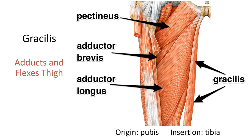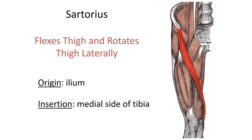The sartorius is the longest muscle in your body — a thin strap-like muscle. It flexes the thigh and rotates it laterally: if you sit down in a chair and cross your legs, you're using this muscle. It originates off the ilium and runs to the tibia. The word sartorius in Latin means tailor — and if you go to a tailor to get pants fitted, they run a measuring tape up your inseam along the sartorius muscle, which is how it got its name.